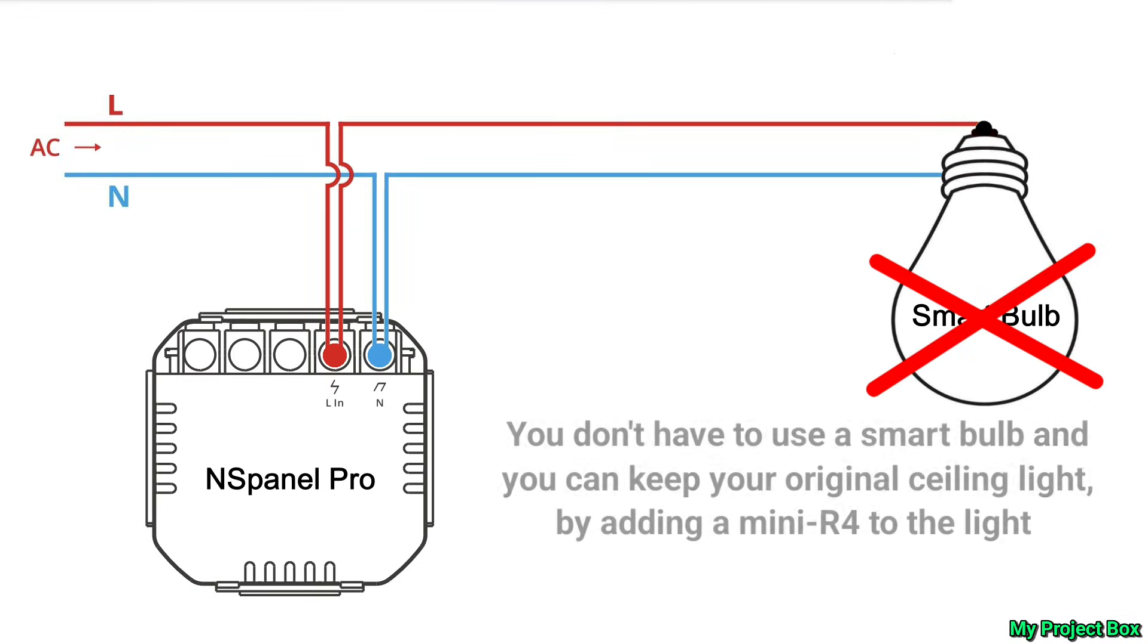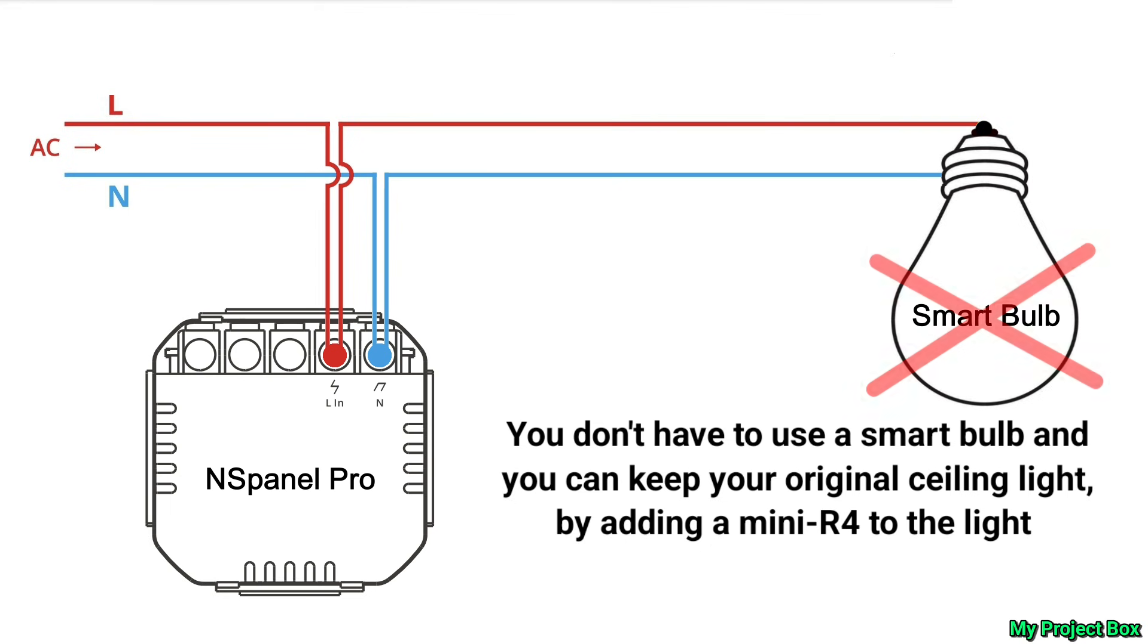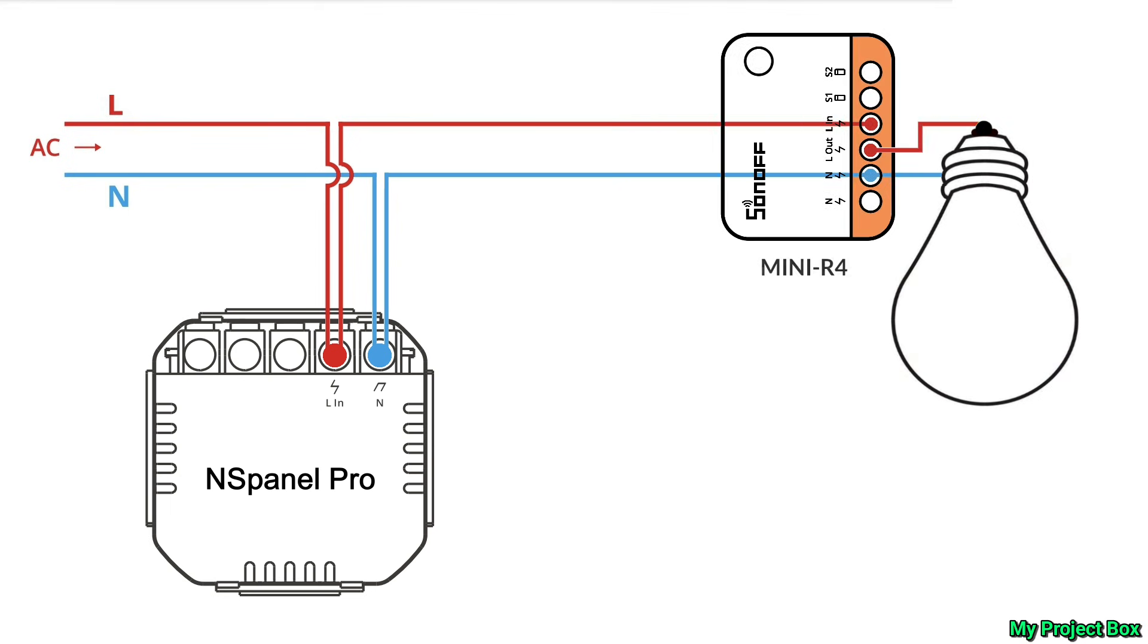Now if you don't want to use a smart bulb because you want to use your original light fixture with its original bulbs, you can always use something like a Sonoff Mini up by the light fixture itself. That way the Mini R4 can control the original light fixture and no smart bulb is required. The R4 just goes in line with the live and neutral feeding the light. The live supply feeds the live in on the R4 and then comes back out of the output feeding the light. The neutral then loops through the neutral terminal on the R4 and goes straight to the light.